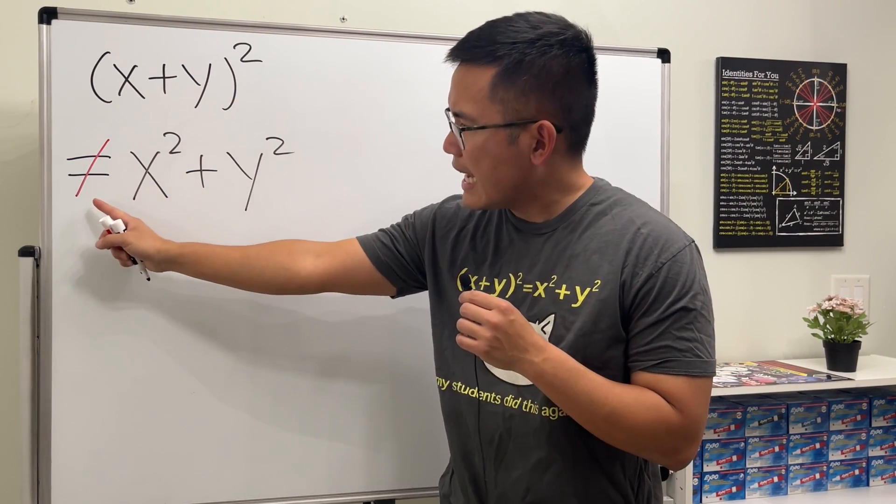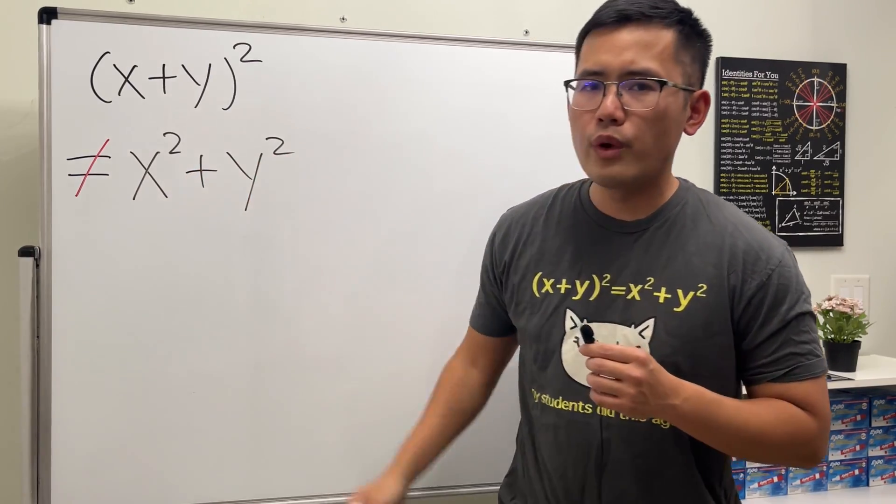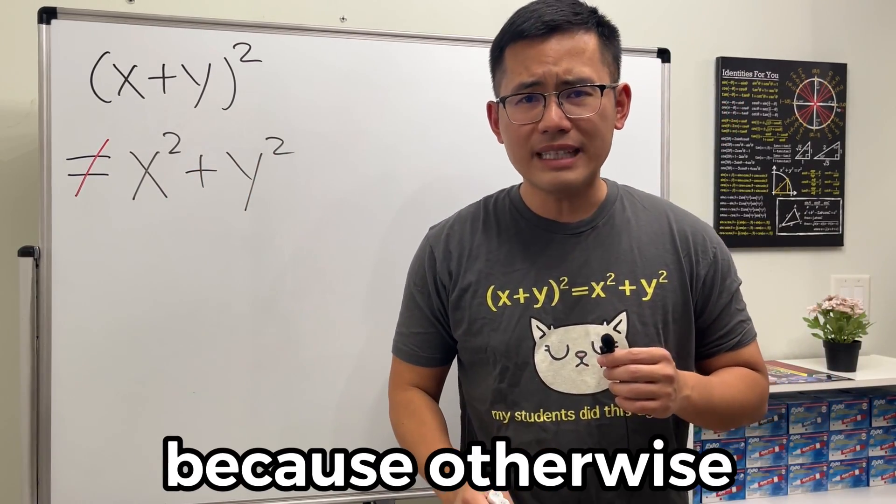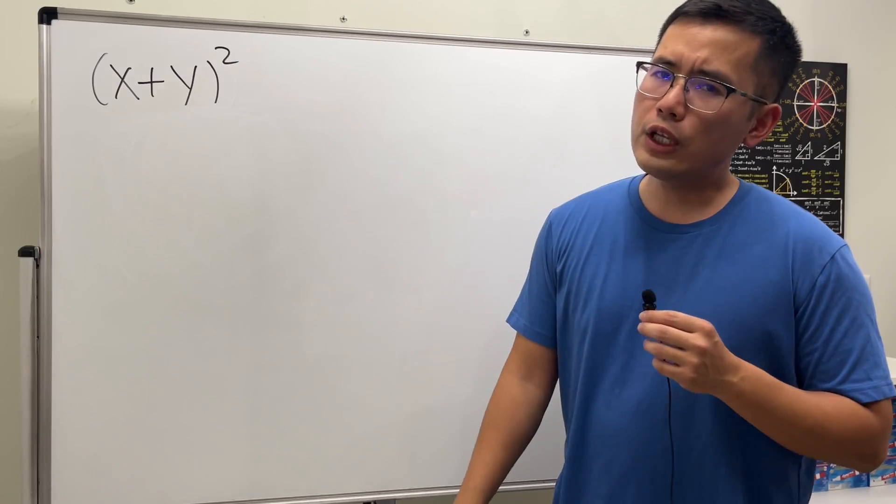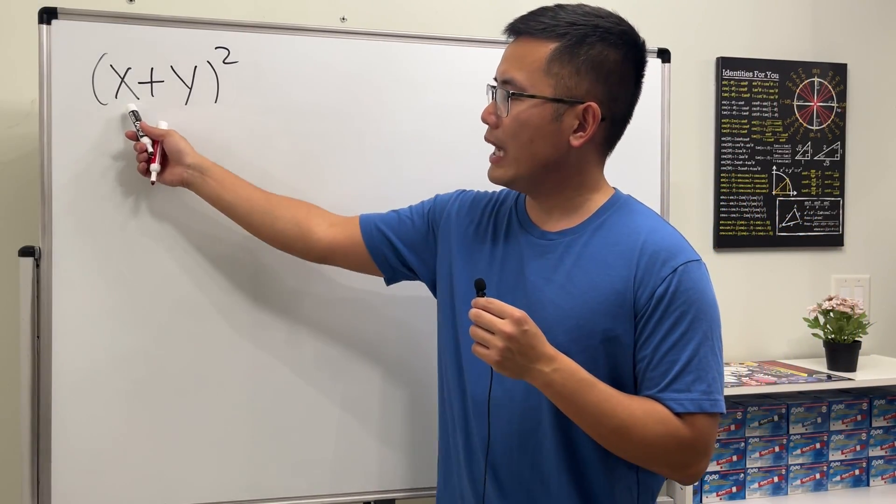x plus y square is not equal to x square plus y square. You have to remember this, because otherwise the cat will be set. Okay, to expand x plus y square, we will have to write this down twice.